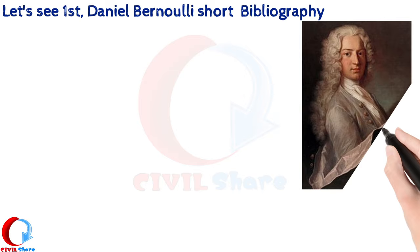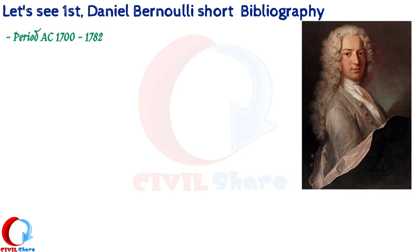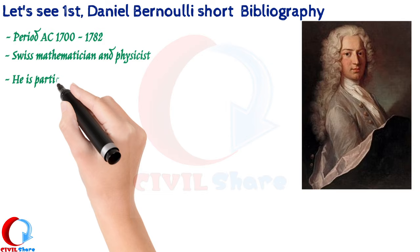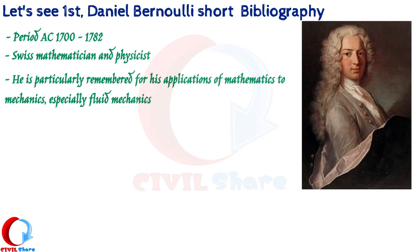Daniel Bernoulli short bibliography: He lived in the period of 1700 to 1782. He is the most distinguished of the second generation of the Bernoulli family of Swiss mathematicians and physicists. He is particularly remembered for his applications of mathematics to mechanics, especially fluid mechanics.